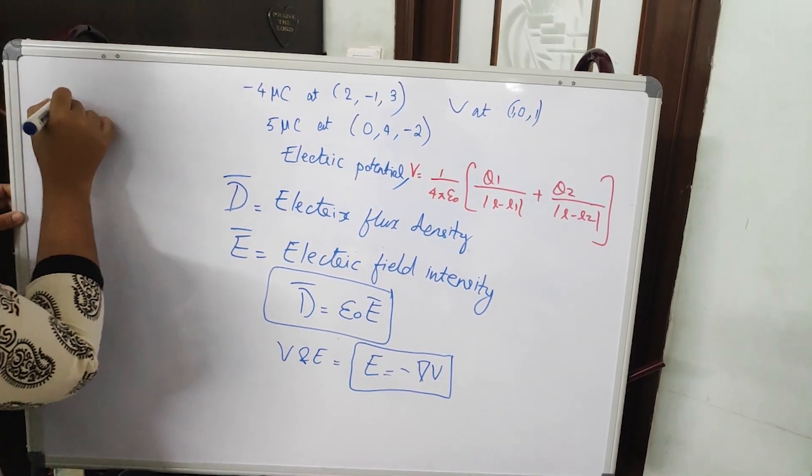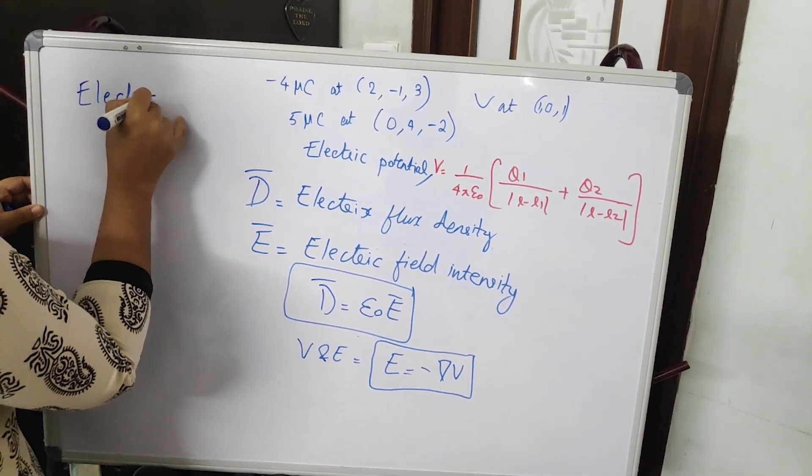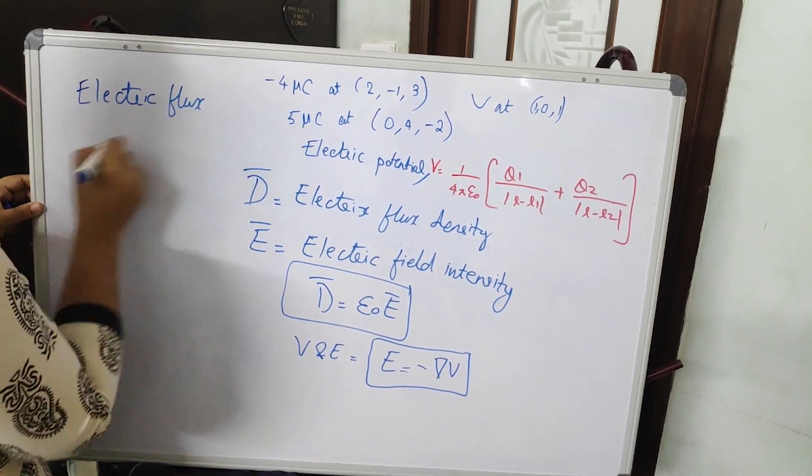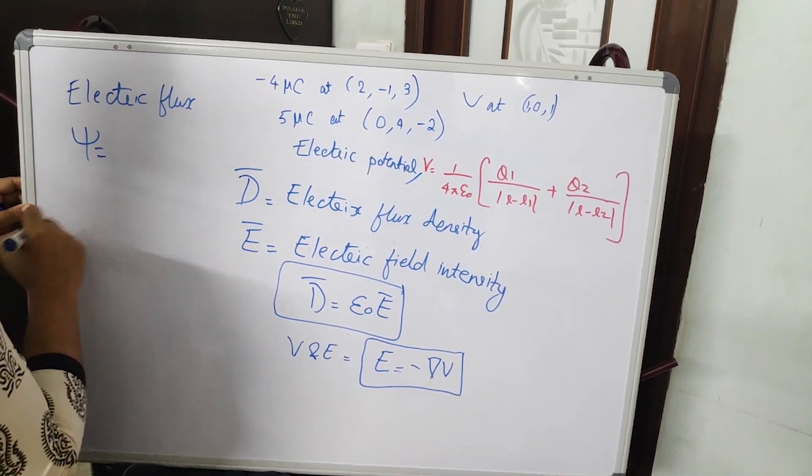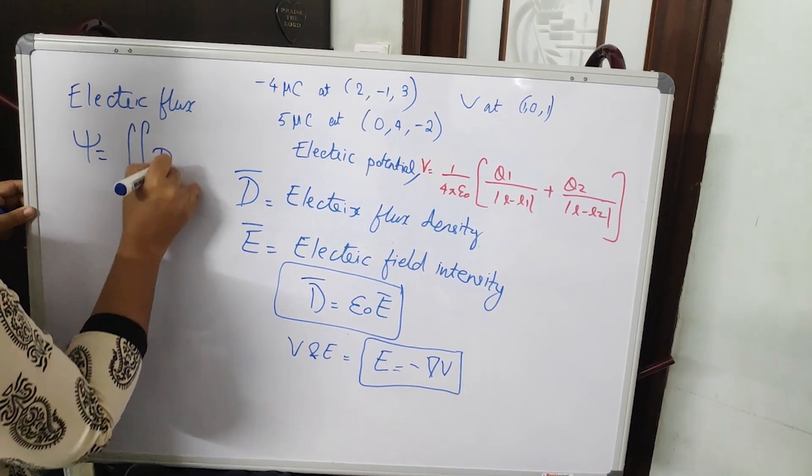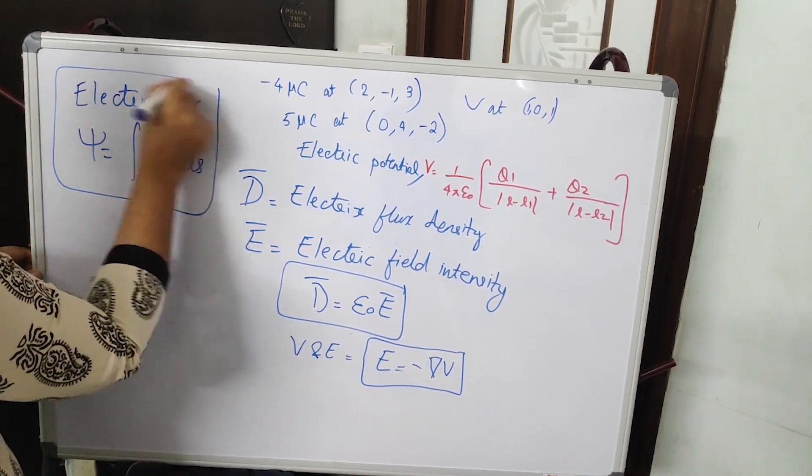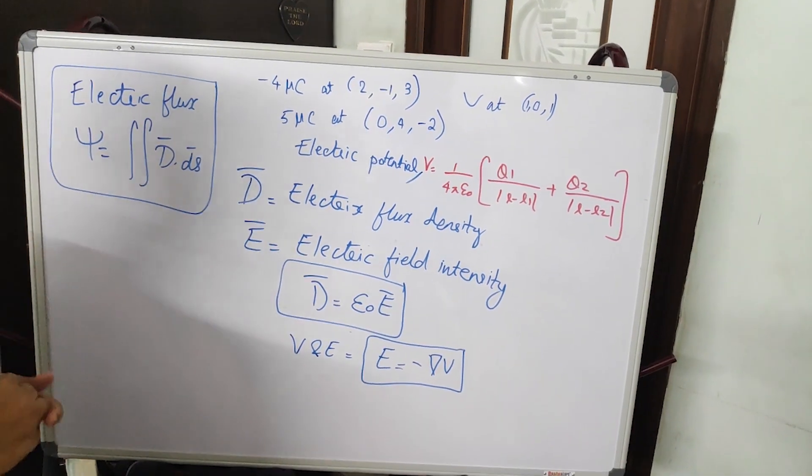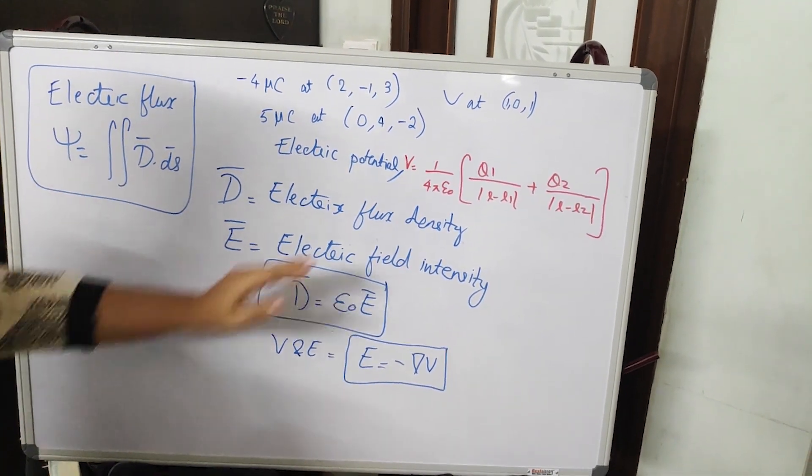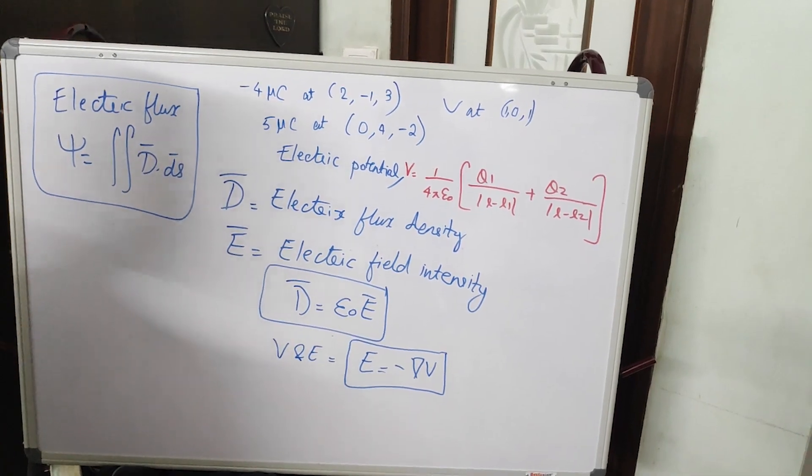Then to calculate the total electric flux, total electric flux psi will be surface integral of D dot ds. This is how to calculate the electric flux. So you just have to learn all these terms: D, E, psi, v, etc.